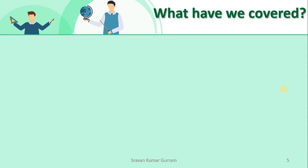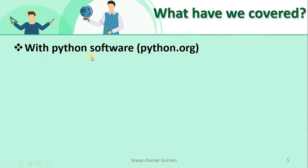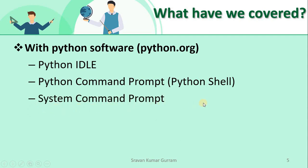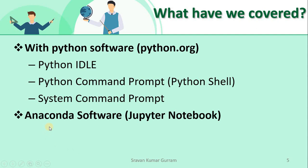We have already executed Python programs using some IDEs and editors. We downloaded standard Python from the official website python.org. While installing this, we get three things: Python IDLE, Python shell or Python command prompt, and the system command prompt — all three ways we covered already. After that, we saw how to download Anaconda software and how to work with Jupyter Notebook, how to develop and execute Python programs using Jupyter Notebook. This is also one of the popular IDEs.